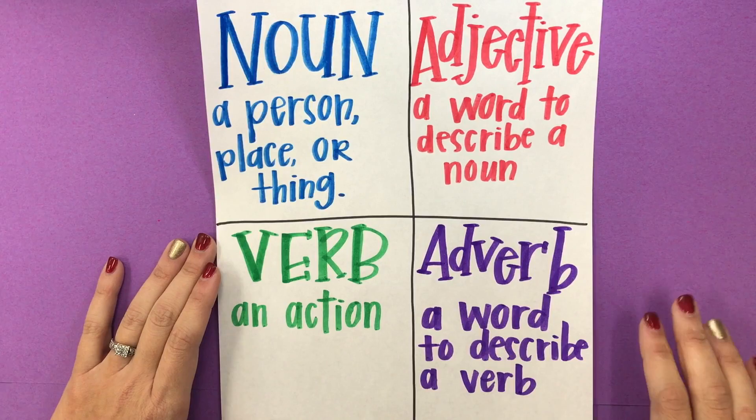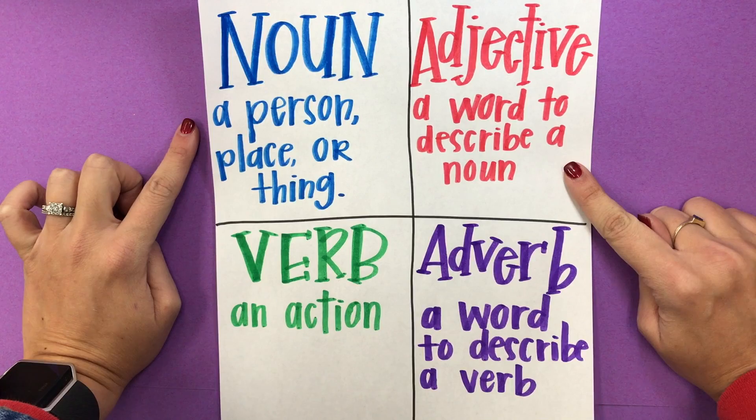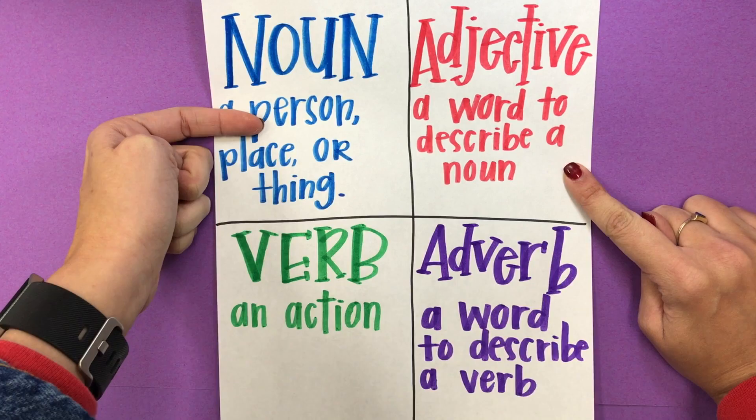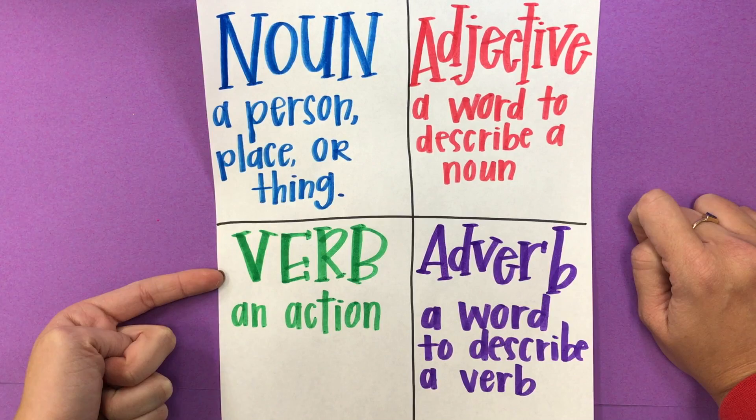We're going to be talking about four parts of a sentence while we are writing our book. The noun, which is a person, place, or thing. The adjective, which is a word to describe the noun — like pretty, or huge, or tiny, or soft.